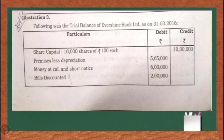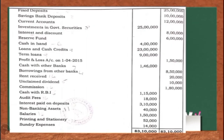Following is the trial balance of Evershine Bank Limited as on 31st March 2016. The items given are: share capital, premises less depreciation, money at call and short notice, bills discounted, fixed deposits, savings bank deposits, current account balances, investments in government securities, interest and discount, reserve fund, cash in hand, loans and cash credits, term loans, profit and loss account balance on 1-4-2015, cash with other banks, borrowings from other banks, rent received, unclaimed dividend, commission, cash with RBI, audit fees, interest paid on deposits, non-banking assets, salaries, printing and stationery, and sundry expenses.